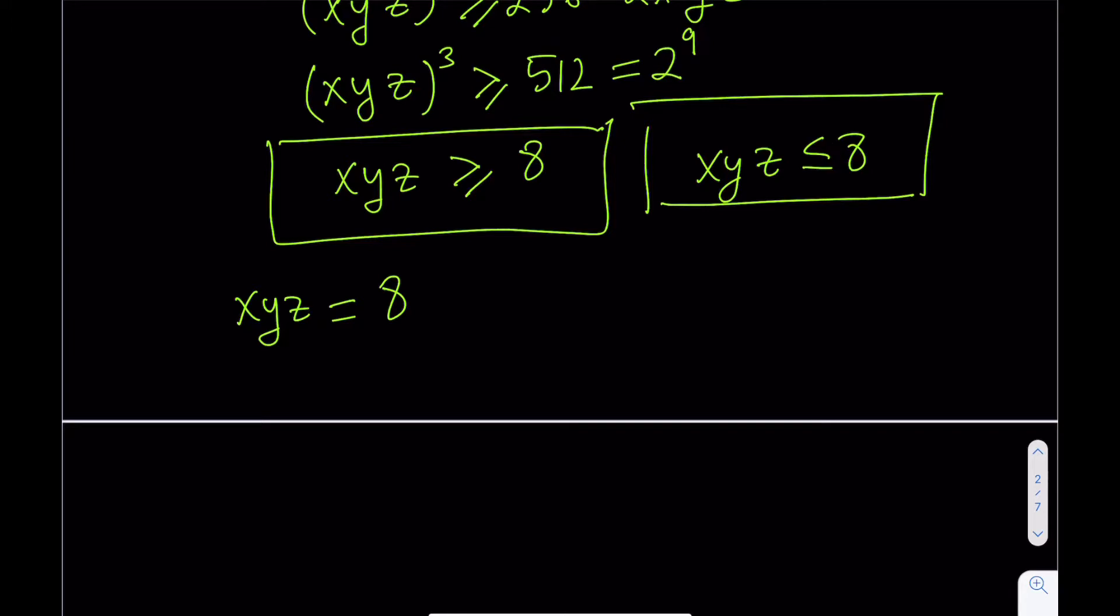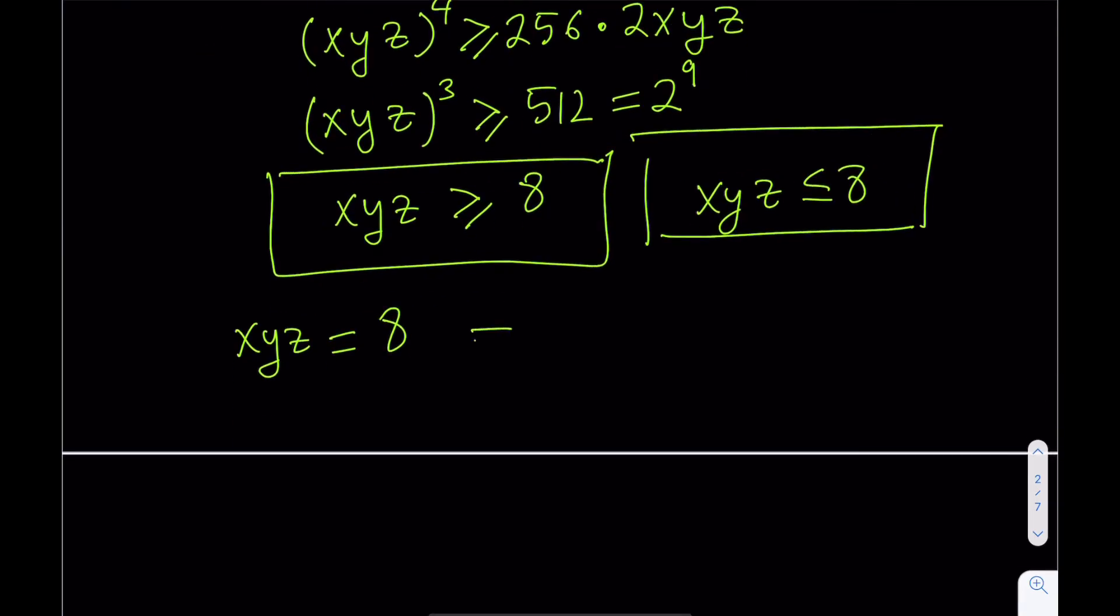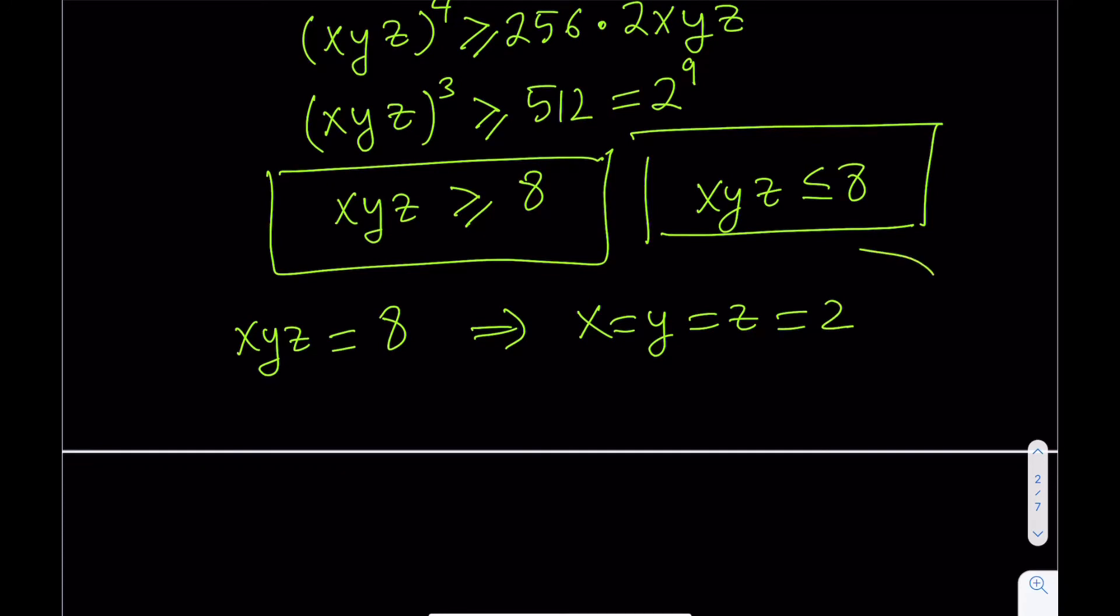So, now, this gives us XYZ, but how do you find X, Y, Z from here? That's another question to ask, right? Well, the AM-GM inequality is an inequality. So, when do we get equality or equation from there? Well, only if X, Y, Z are equal. So, in this case, if this is satisfied, that means that X equals Y equals Z, and that can only happen when they're all equal to 2. So, that's the only solution to this system of equations.